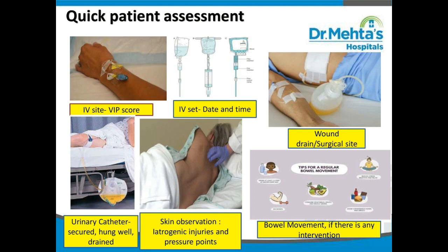To have a quick patient assessment, we need to check many things. Assess the IV site and note down the VIP score; check the IV insertion date and time, then check the date and time on IV sets and IV fluid bottles. If there is any wound drain or surgical site present, check for soakage. If a urinary catheter is present, check whether it is secured well, hung well, and drained well. Then observe the skin for any iatrogenic injuries and pressure points, and enquire about bowel movement if any intervention is needed.